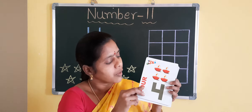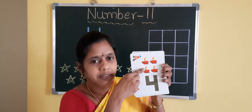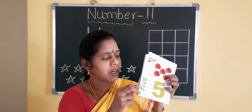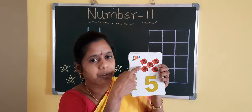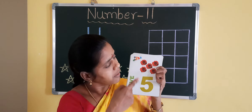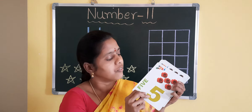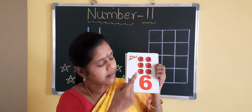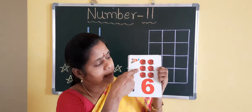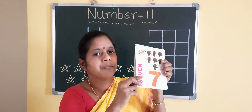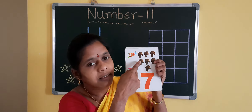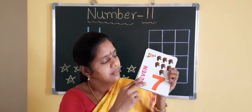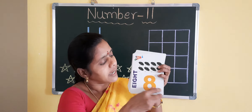4, 4 dias. 5, 5 roses. 6, 6 apples. 7, 7 elephants.